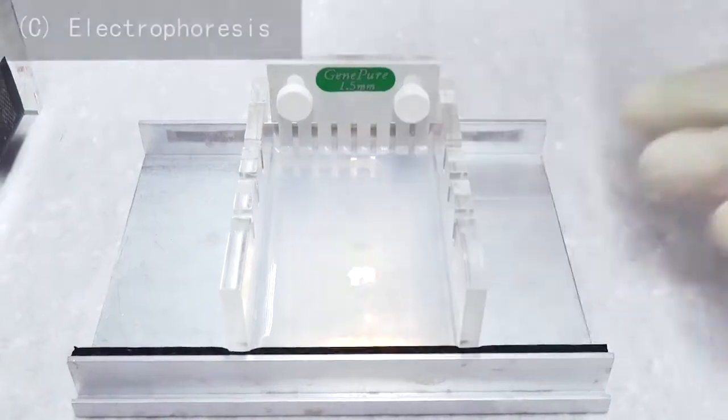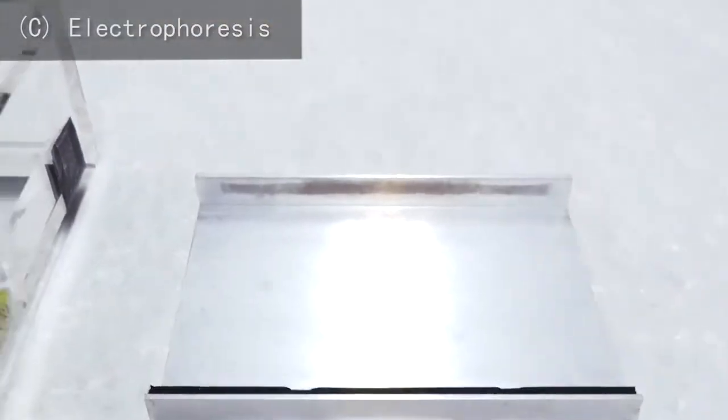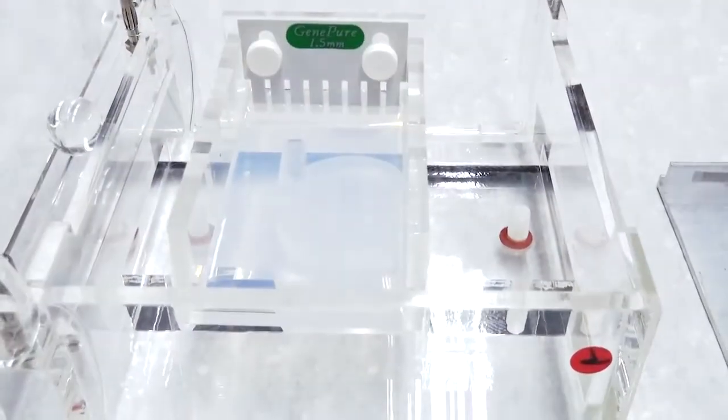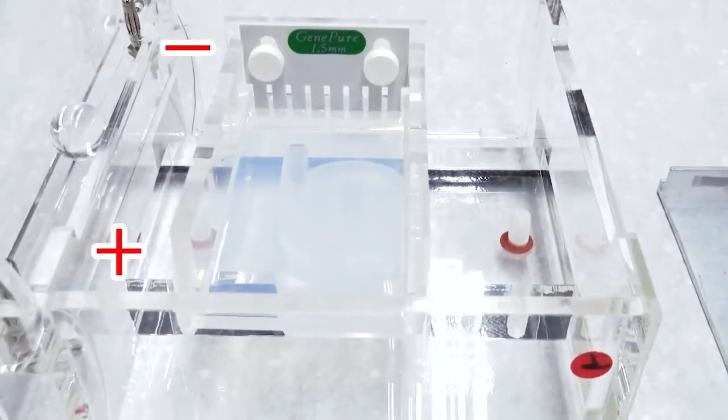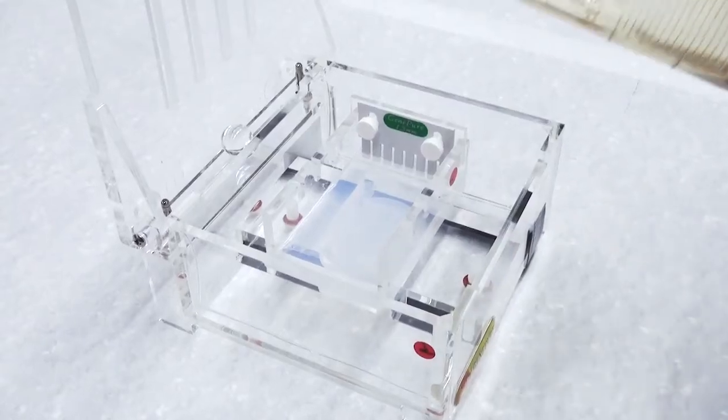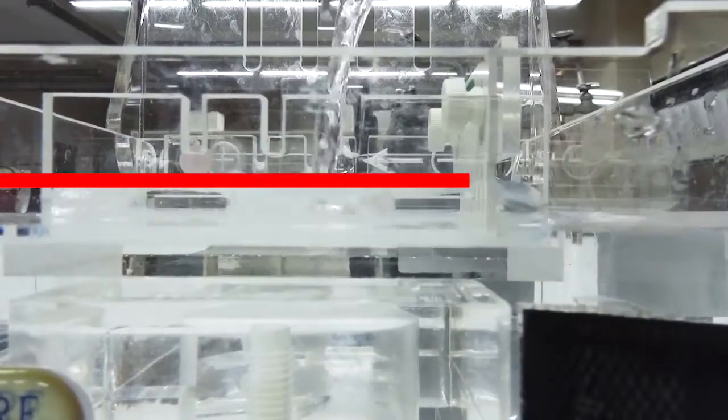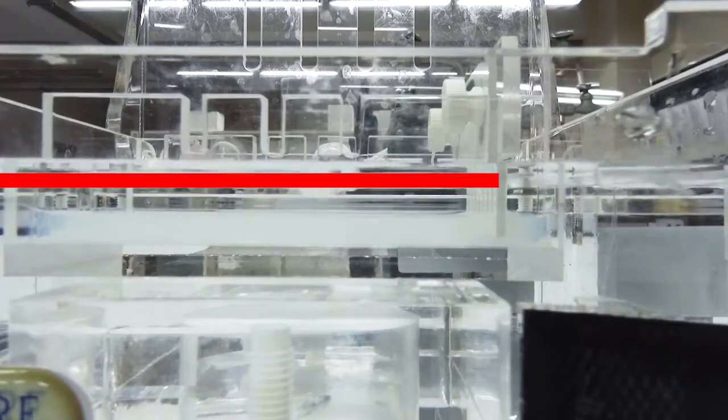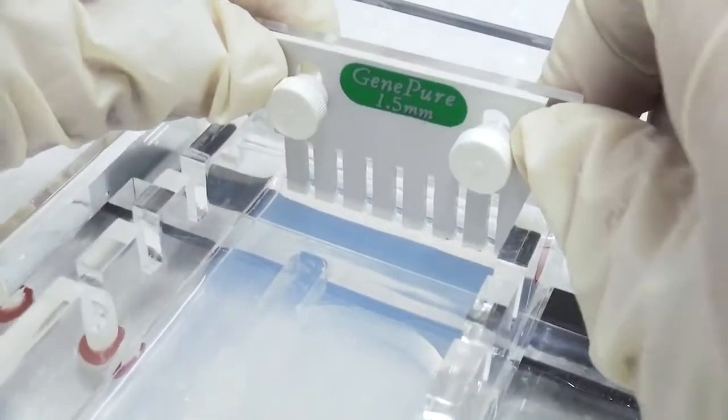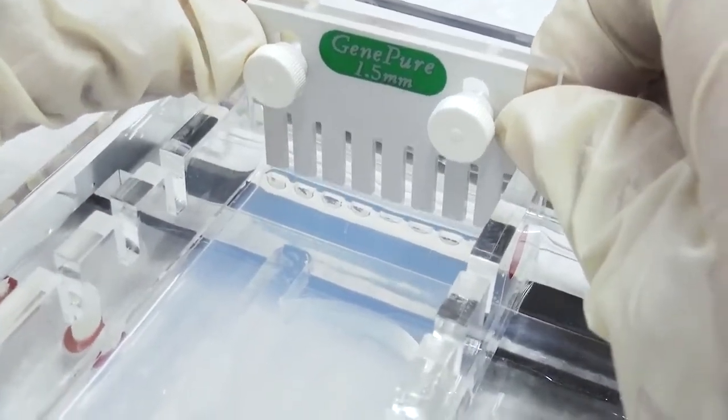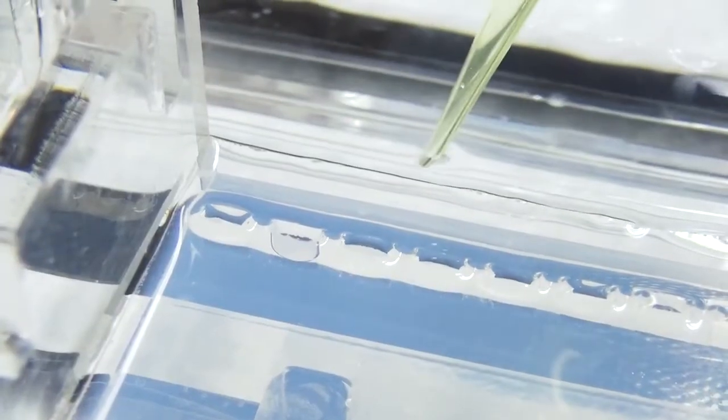Install the gel tray holding the solidified agarose gel into the electrophoresis tank. The side of the gel with the comb should be at the negative electrode. Pour enough electrode buffer into the tank so that it just covers the gel. Remove the comb gently. Wash the loading wells with electrode buffer to get rid of bubbles.